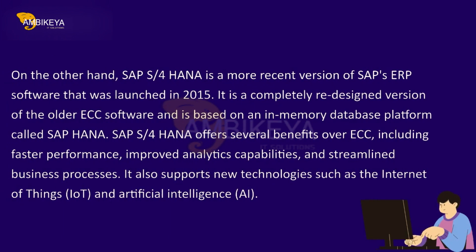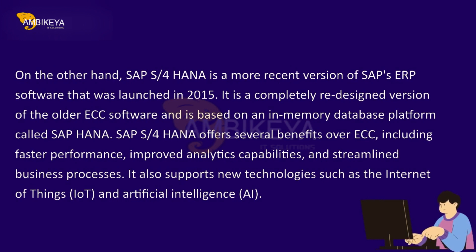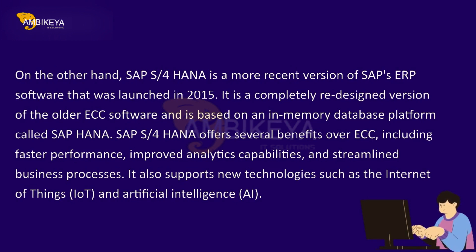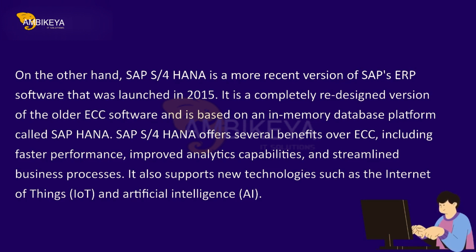On the other hand, SAP S/4HANA is a more recent version of SAP's ERP software that was launched in 2015. It is a completely redesigned version of the older ECC software and is based on an in-memory database platform called SAP HANA. SAP S/4HANA offers several benefits over ECC, including faster performance, improved analytics capabilities, and streamlined business processes.